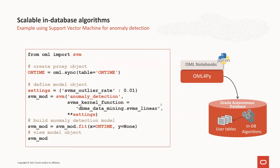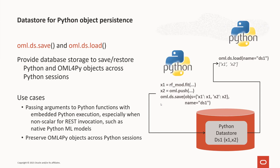In this example, we illustrate using the in-database support vector machine algorithm. After importing SVM from the OML package and getting our proxy object, we specify the desired outlier rate in the dictionary variable settings. In the SVM function, we specify that we want to do anomaly detection, that we want a linear kernel, and then we pass the settings. Anomaly detection uses the special one-class support vector machine algorithm, and the outlier rate indicates our selectivity for anomaly detection. We then invoke the fit function to train the model and view the model details by displaying the result object. The datastore allows users to save Python objects, including OML4Py proxy objects, in the database as a named entity, and load them back into Python memory across client sessions.